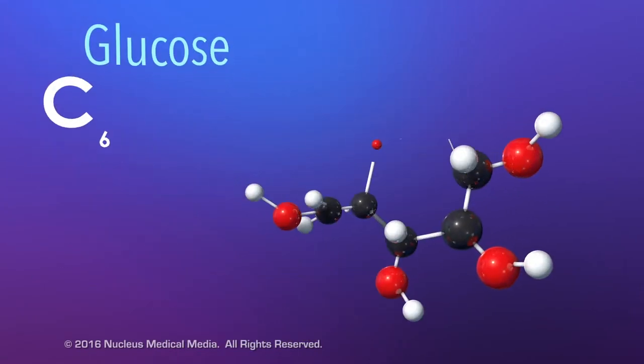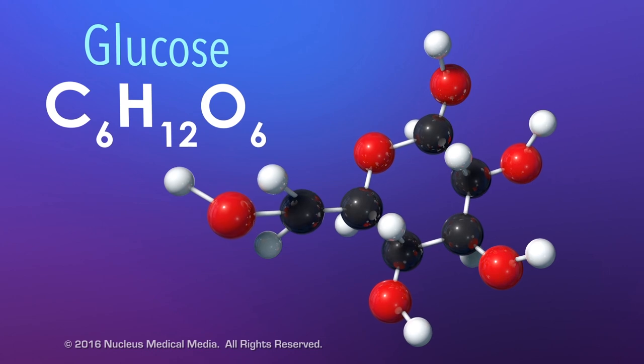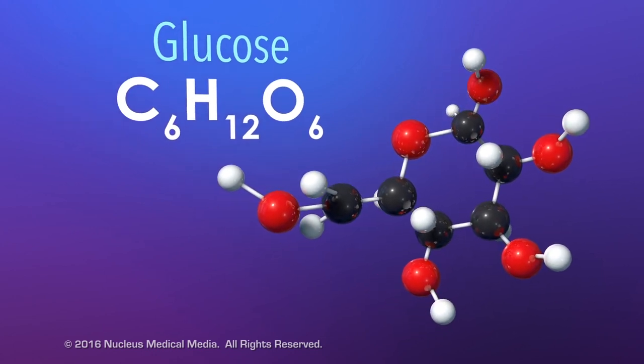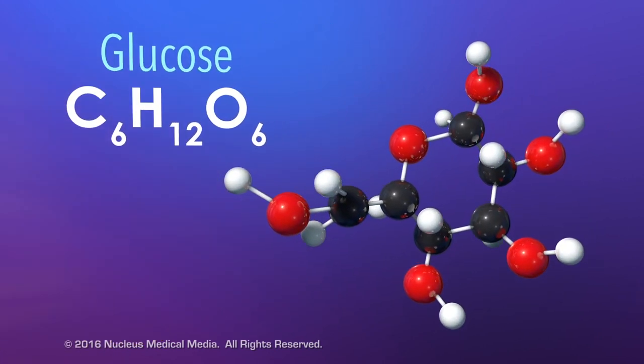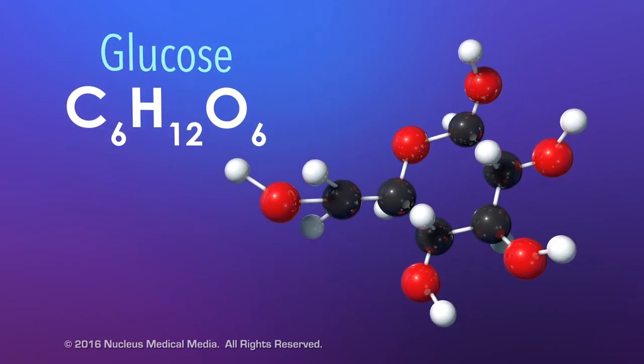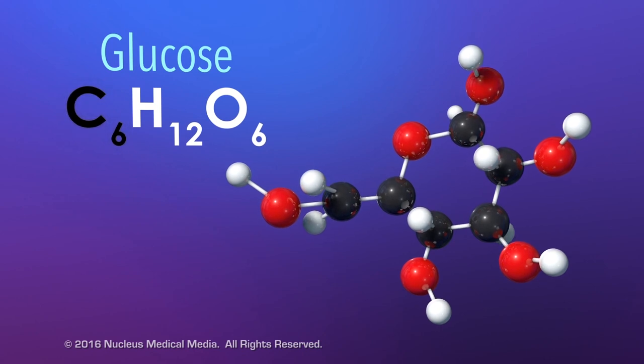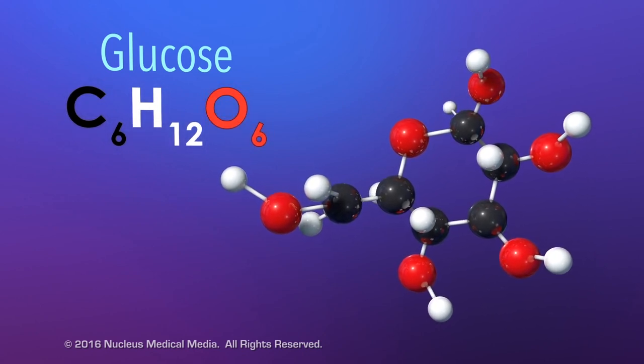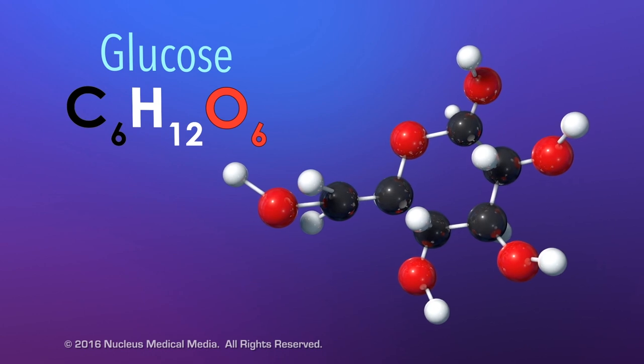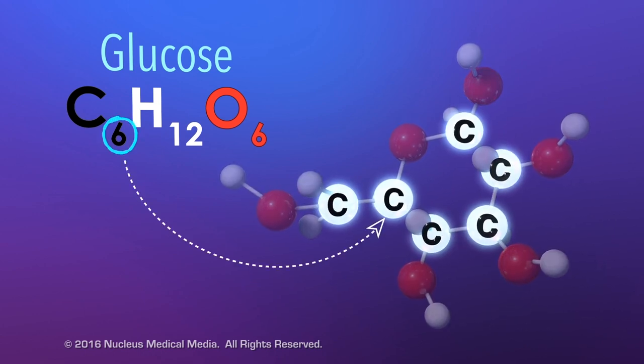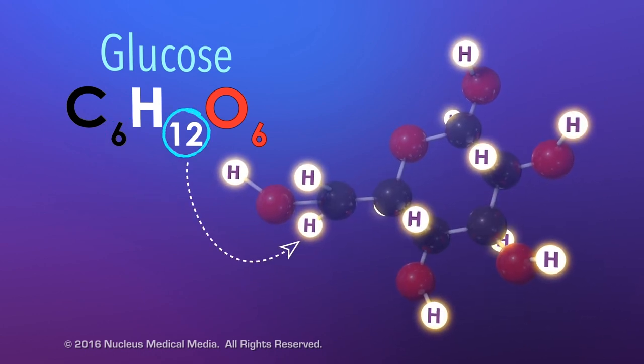Okay, the last example of a compound is glucose, a simple sugar your body cells use for energy. The chemical formula for one unit of glucose is C6H12O6. Here we can see that one unit of glucose has six carbon atoms and 12 hydrogen atoms.